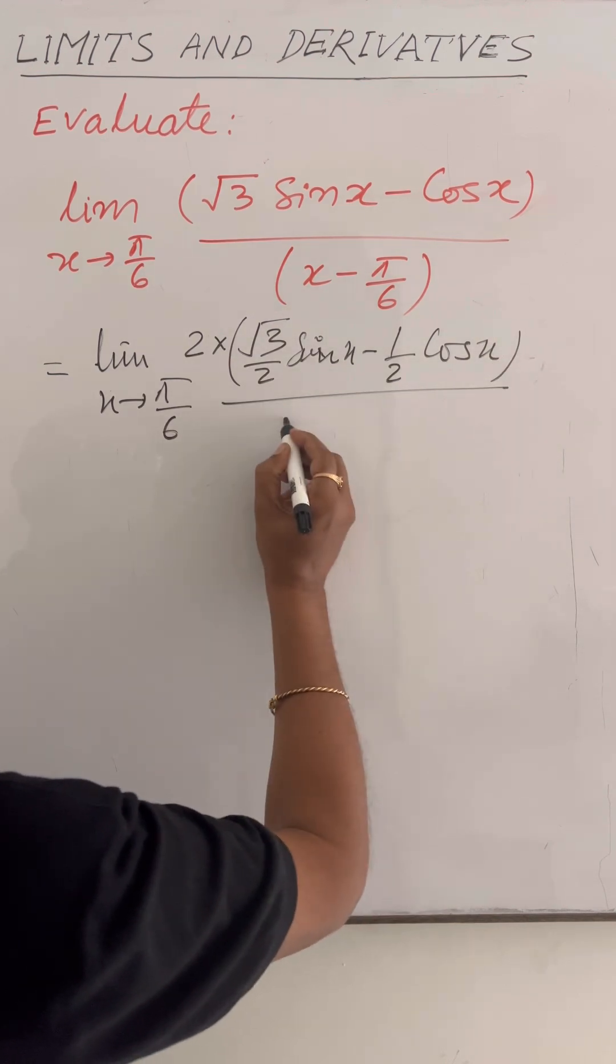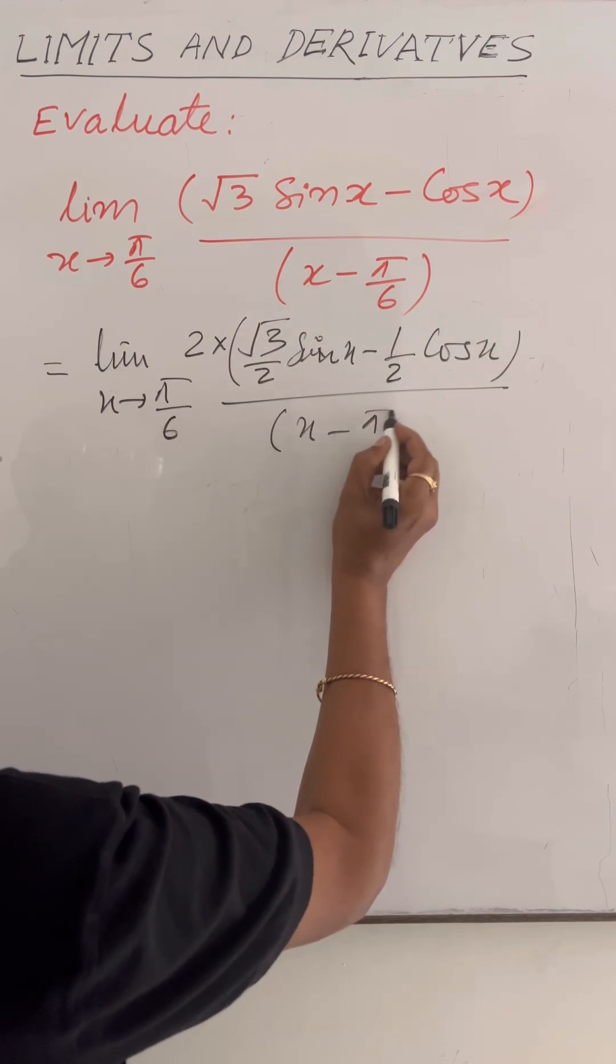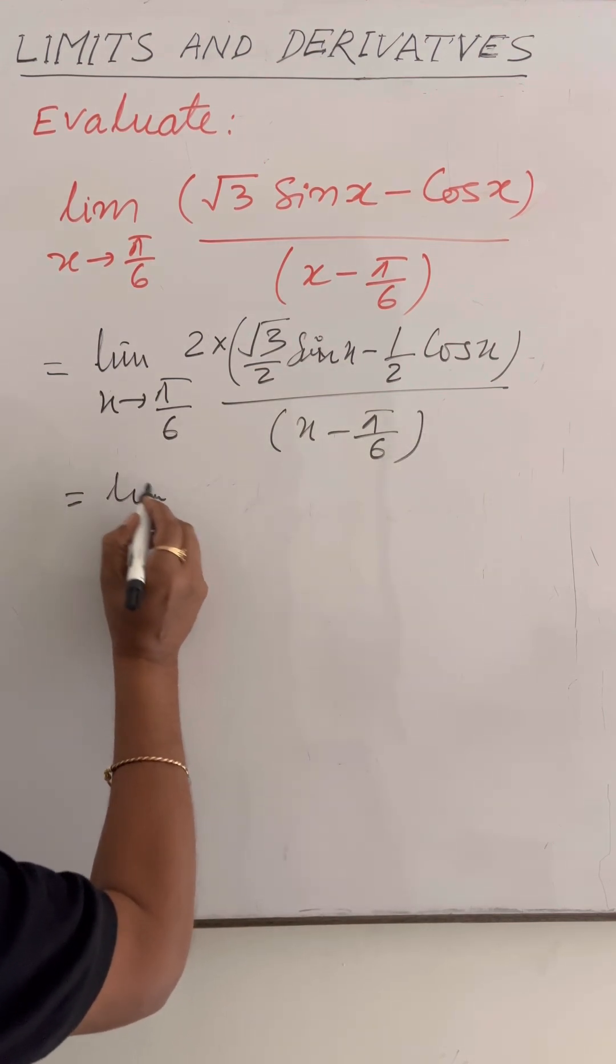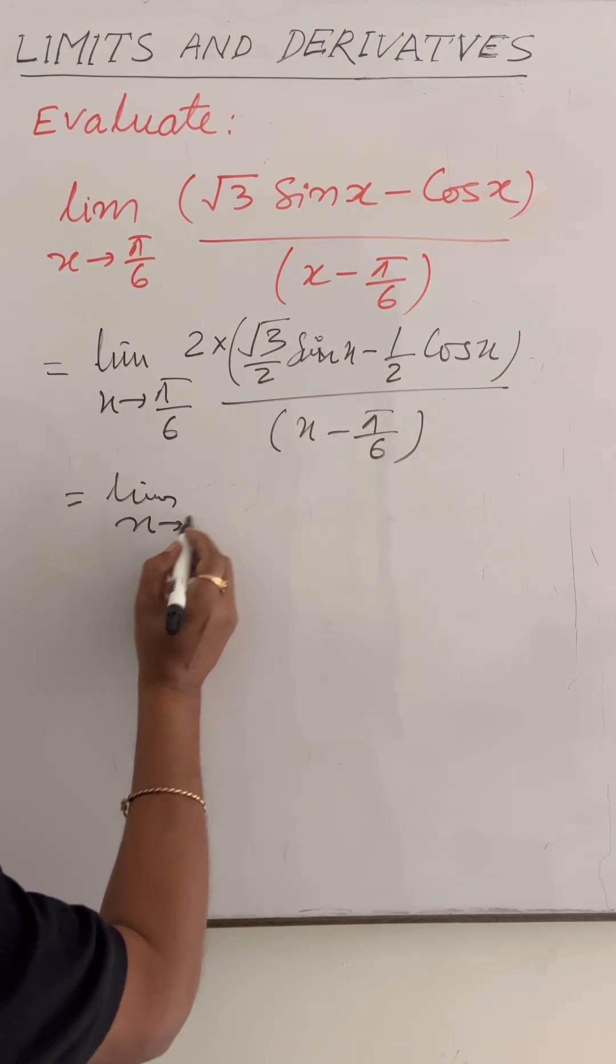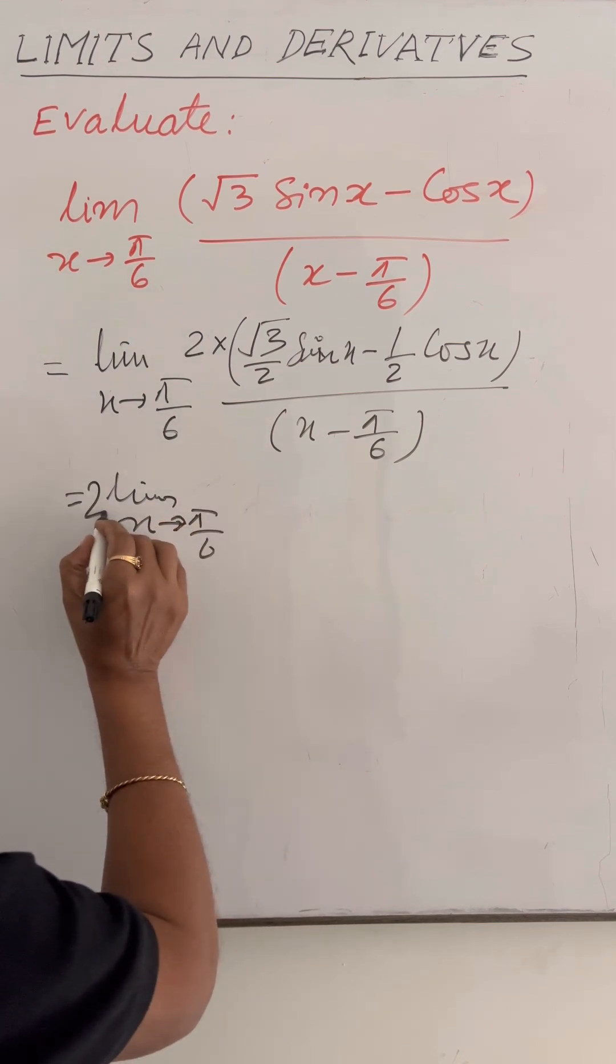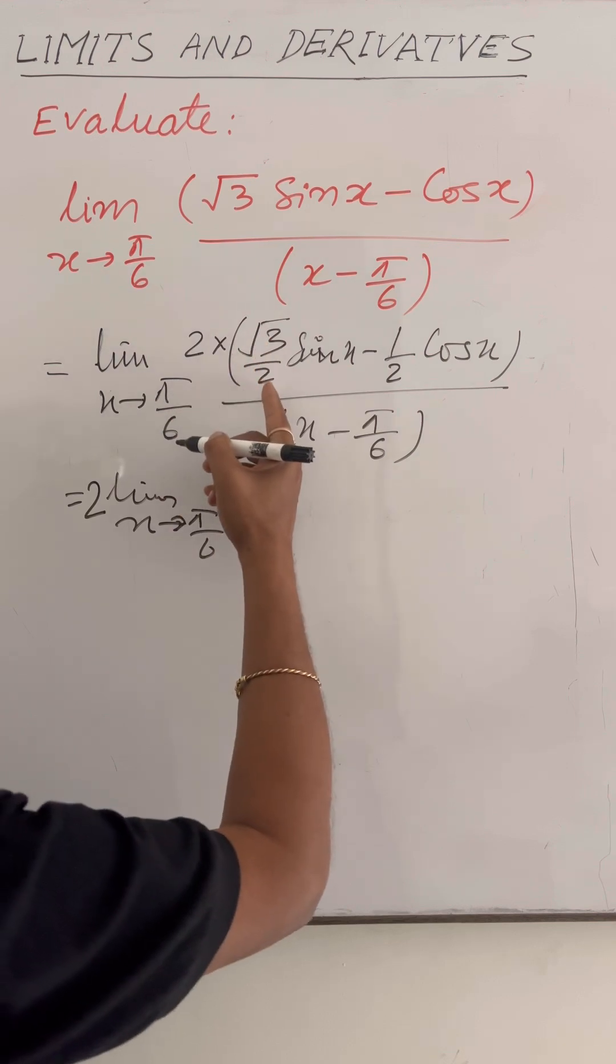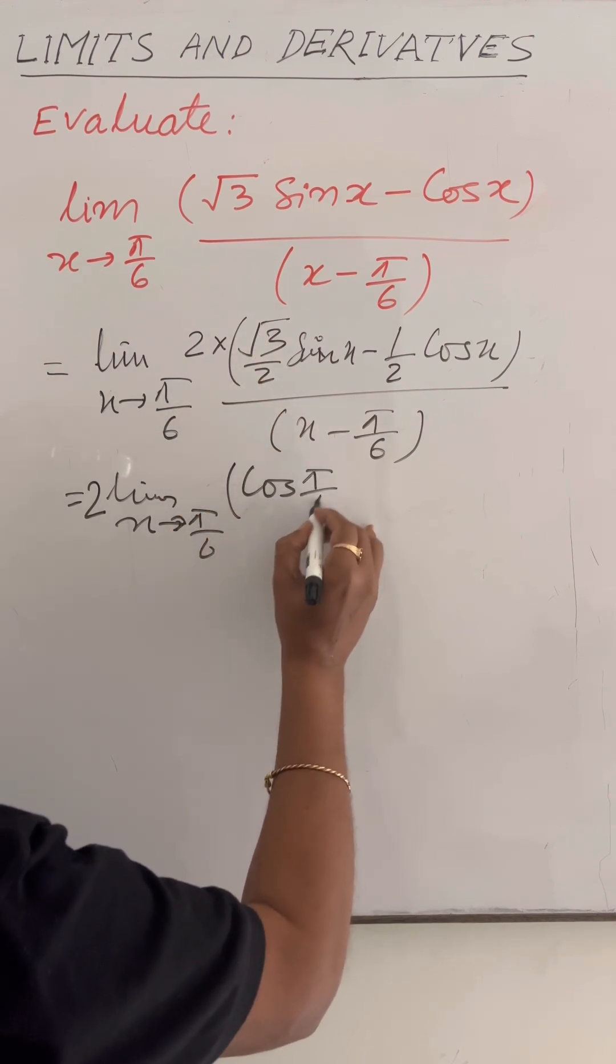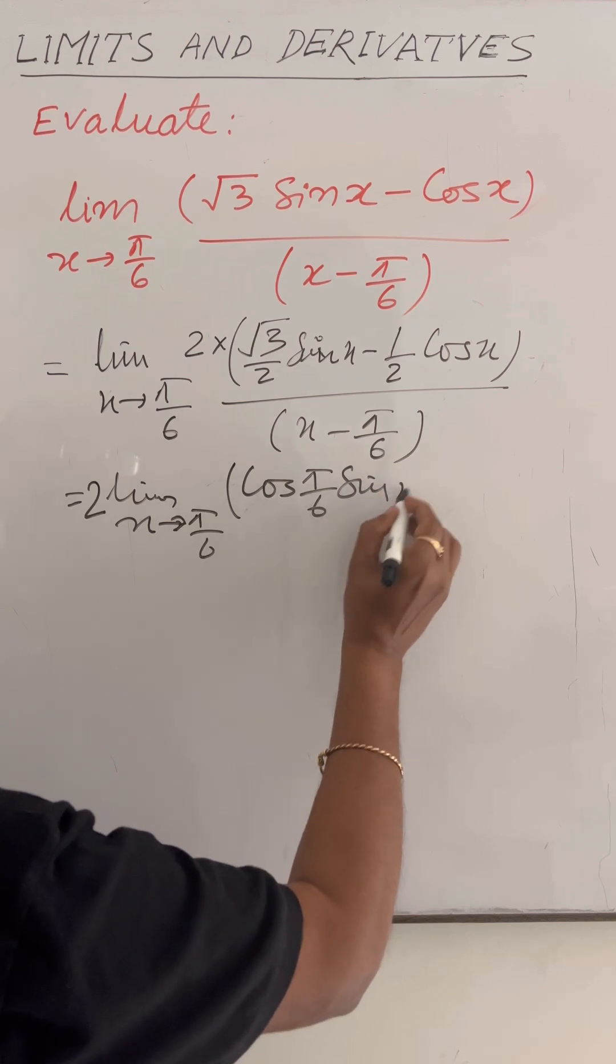This is equal to limit x tends to π by 6. 2 can be written here. √3 by 2 is cos π by 6. This is cos π by 6 into sin x.